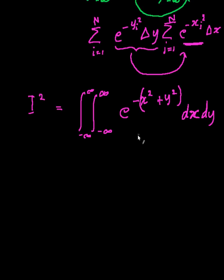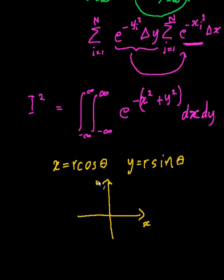Okay, so now we've done most of the work. Now all we have to do is convert it into polar coordinates. Right, so I'm going to let x equal to r cos theta, and y equal to r sine theta. Okay, so if I draw a little grid, so that's my x and y.